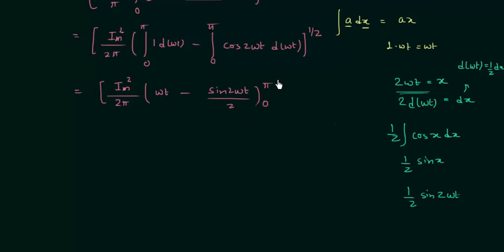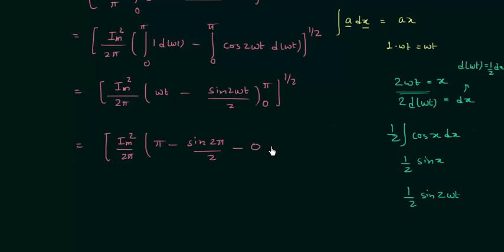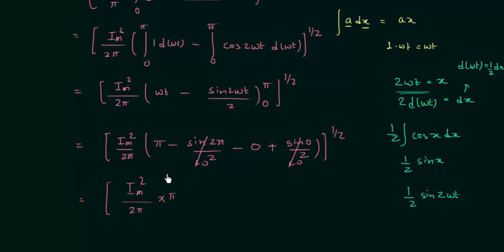The lower limit is 0 and upper limit is π. First we put the upper limit: ωt equals π gives π minus sin(2π)/2. Then the lower limit: ωt equals 0 gives 0 minus sin(0)/2. Sin(2π)/2 equals 0 and sin(0)/2 equals 0. So finally we have Im²/(2π) multiplied by π, and π cancels with π, leaving Im divided by root 2.